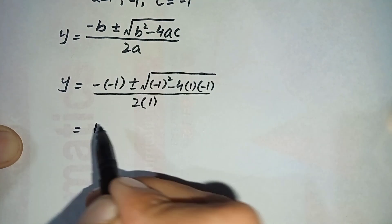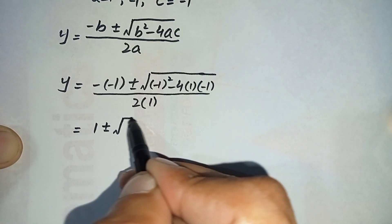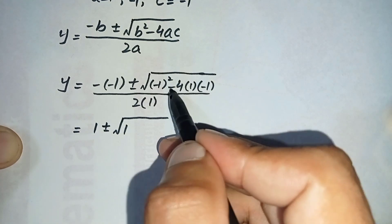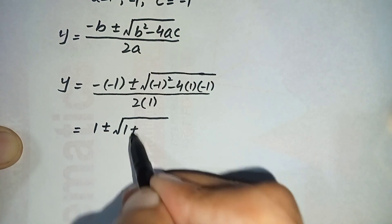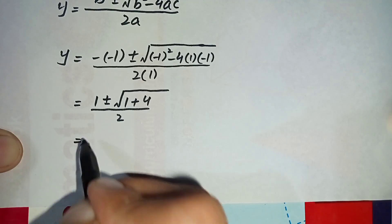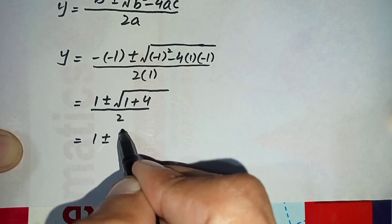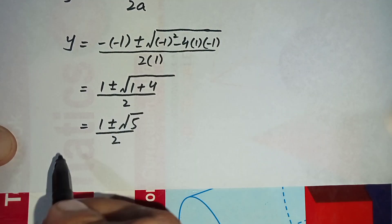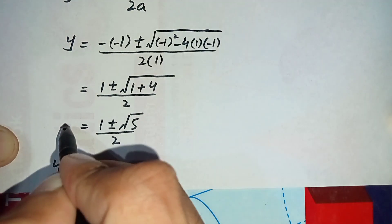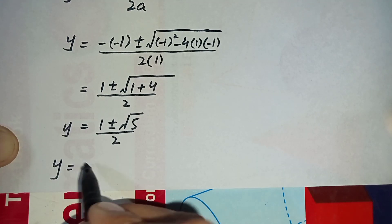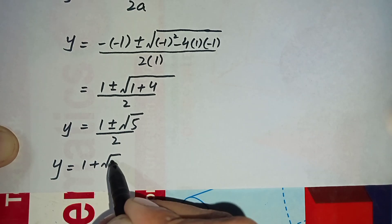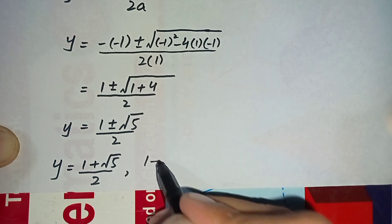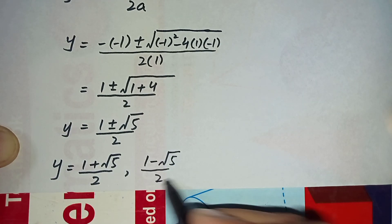Simplifying: minus minus 1 is plus 1, minus 1 squared is 1, and minus 4 times minus 1 is plus 4, so we get 1 plus or minus square root of 1 plus 4, divided by 2, which is 1 plus or minus square root of 5, divided by 2. So the two possible values of y are: (1 plus square root of 5) divided by 2, and (1 minus square root of 5) divided by 2.